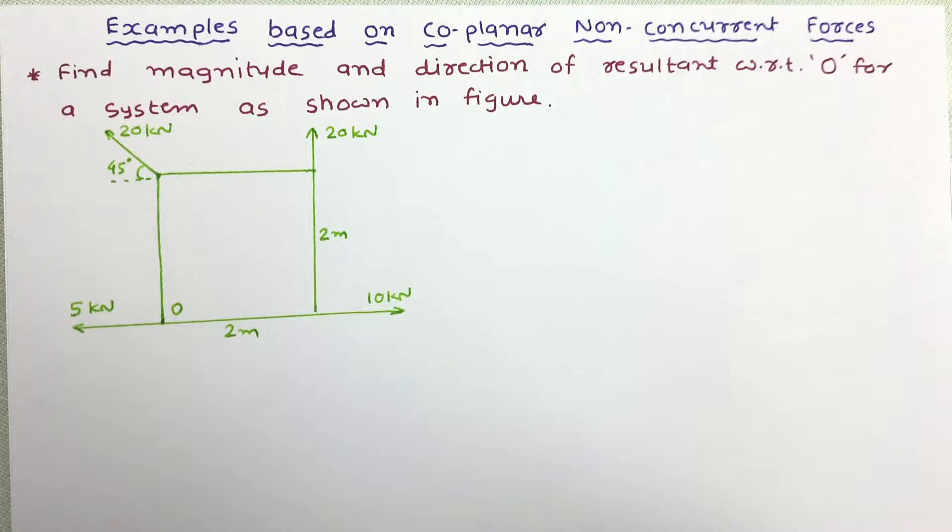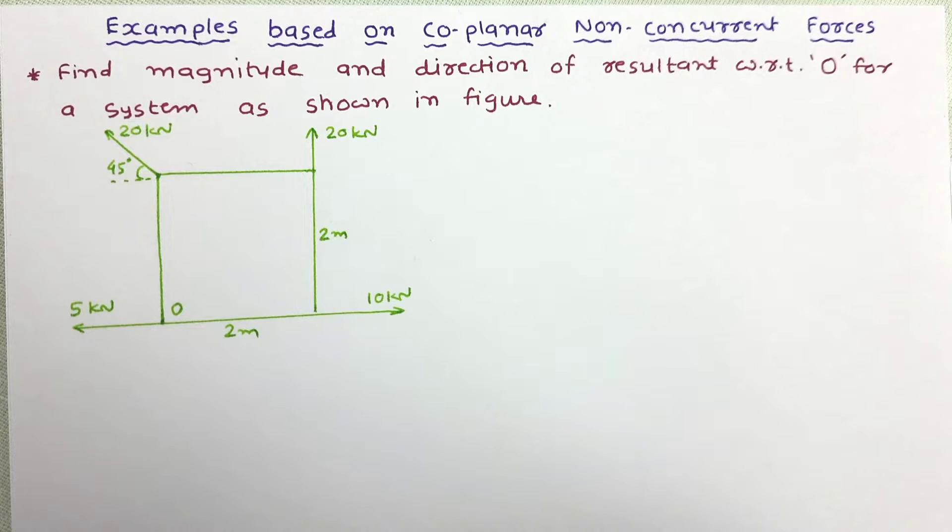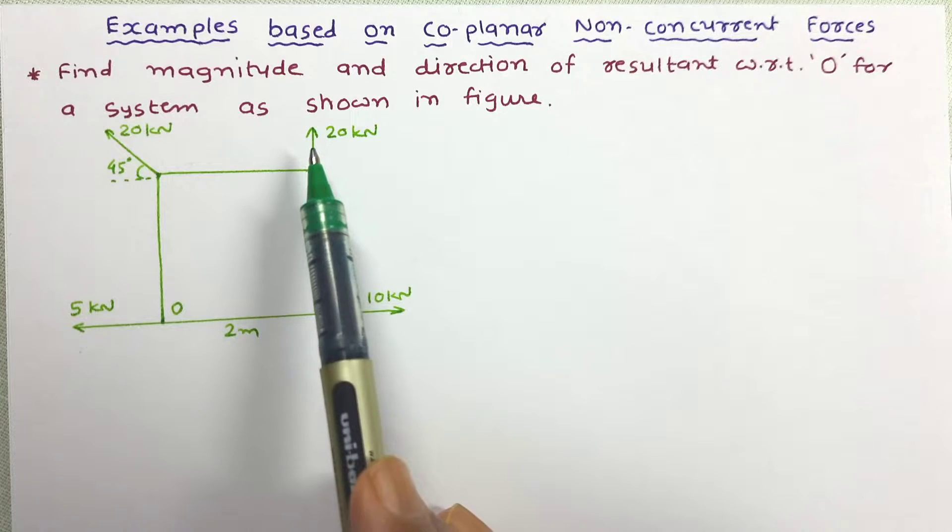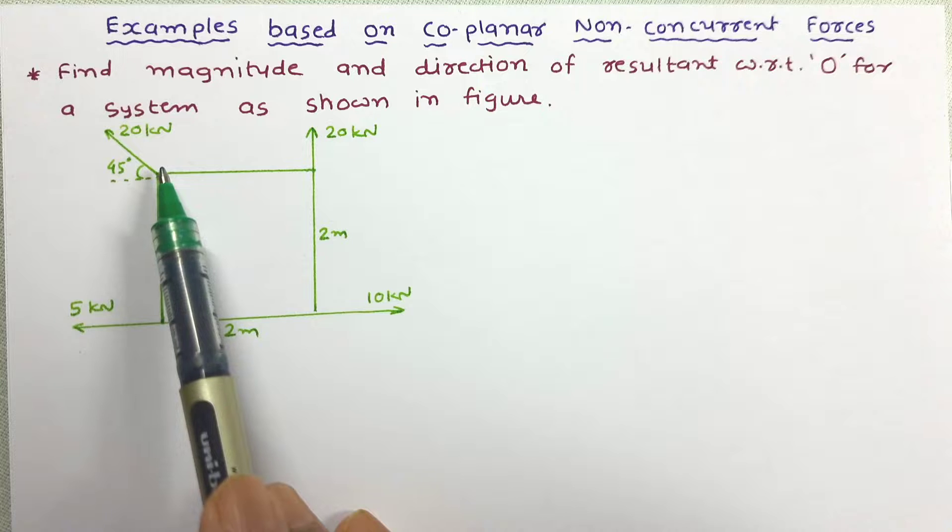First of all we need to determine sigma h, that is summation of all horizontal forces, and sigma v, that is algebraic sum of all vertical forces. But before that, here we can see all the forces are either in horizontal or vertical direction except one, so this force needs to be resolved first.